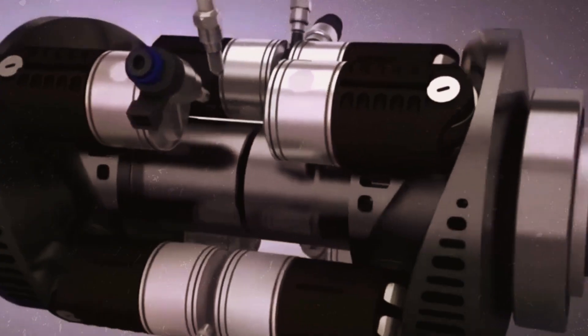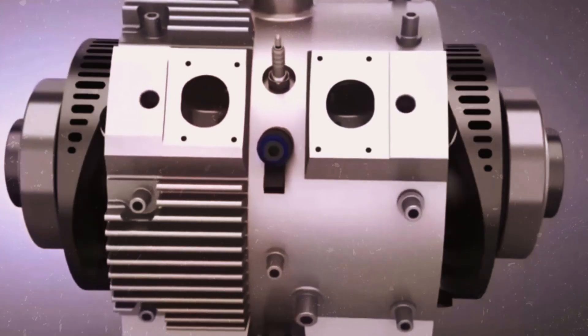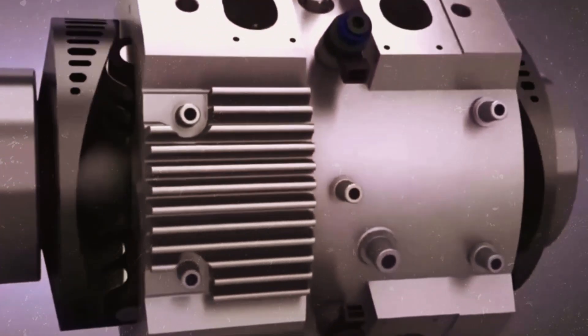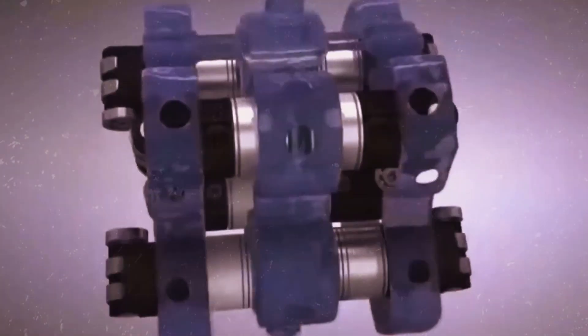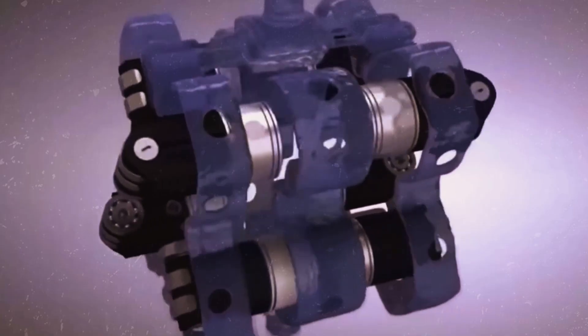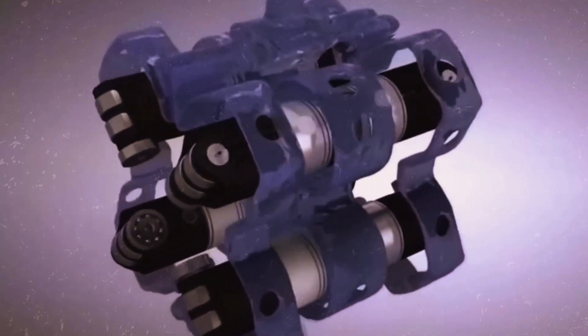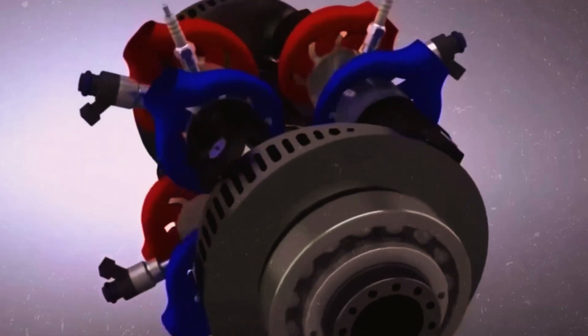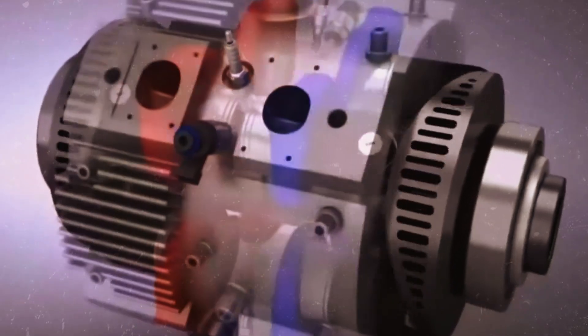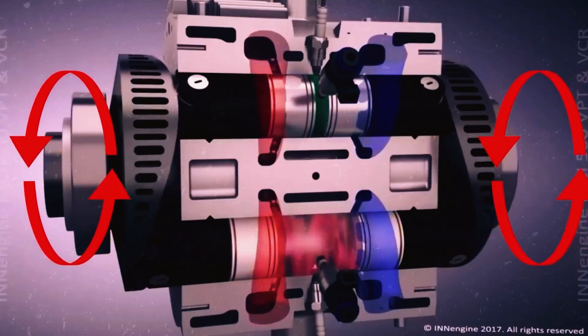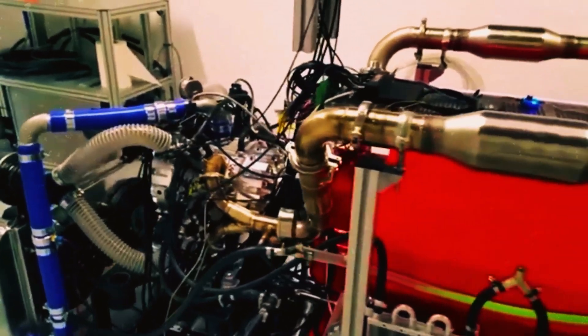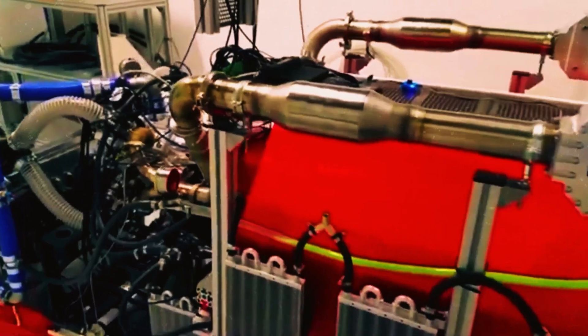A common trait among traditional two-stroke engines is their oil consumption for lubrication and cooling purposes. However, the ION engine distinguishes itself by operating as a two-stroke engine without burning oil for cooling or lubrication, a process carried out separately, akin to four-stroke engines. Moreover, the thermodynamic efficiency of two-stroke engines is typically higher than that of four-stroke engines, though they are often louder and more pollutive.